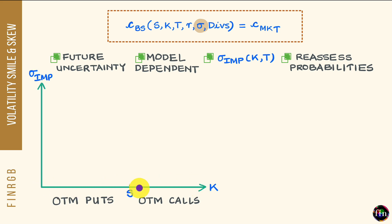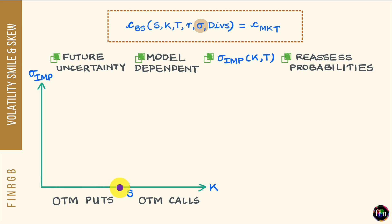Looking at the x-axis, it is divided into three regions. If the spot price is S, then the point where K equals S is associated with an at-the-money option. The region to the left of this point — where K is less than S — is associated with out-of-the-money puts or in-the-money calls. The region where K is greater than S is associated with out-of-the-money calls or in-the-money puts.